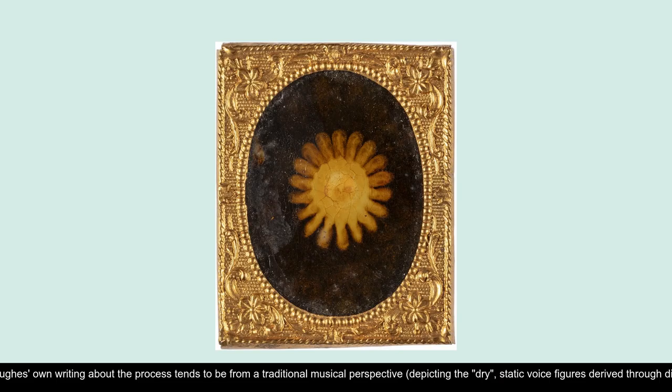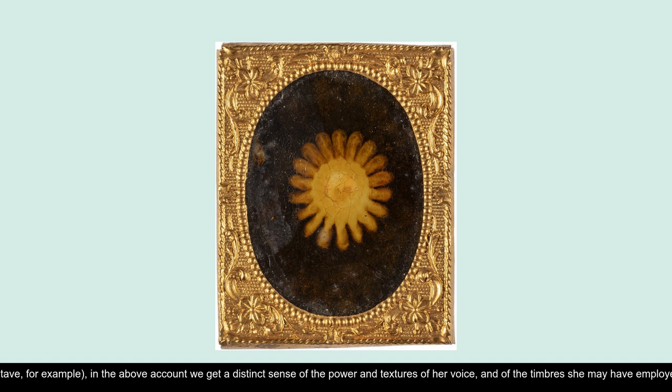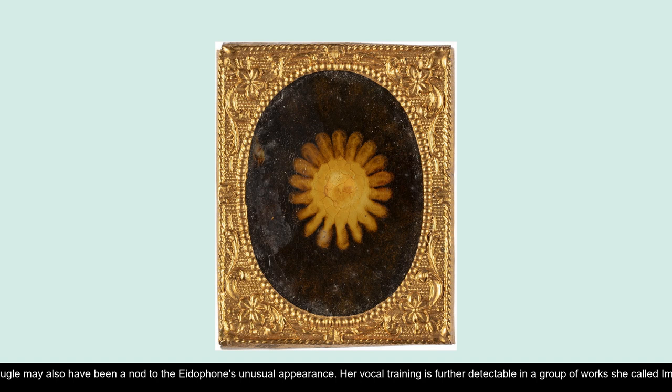While Watts Hughes' own writing about the process tends to be from a traditional musical perspective, depicting the dry, static voice figures derived through different pitches above a musical stave, for example, in the above account we get a distinct sense of the power and textures of her voice and of the timbres she may have employed, although the reference to the bugle may also have been a nod to the eidophone's unusual appearance. Her vocal training is further detectable in a group of works she called 'impression figures.'